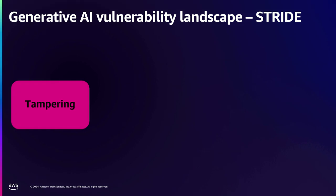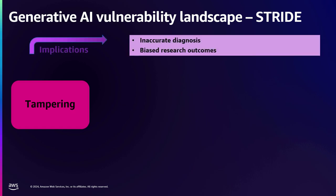The second threat is tampering, which is an integrity-damaging threat. Tampering refers to the intentional introduction of malicious data into the training process of the AI model, with the goal of causing the model to behave in an unintended or harmful way.